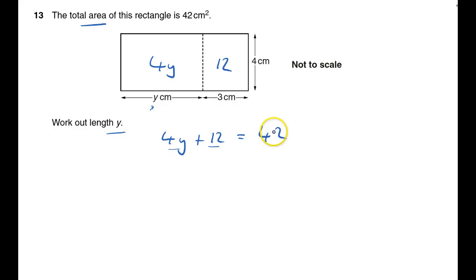Now I can just solve the equation as you would normally. Take away 12 from both sides, and that will leave me with 4y equals 30. And then divide by 4.